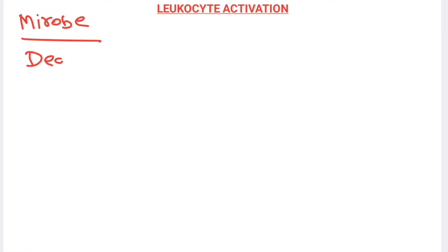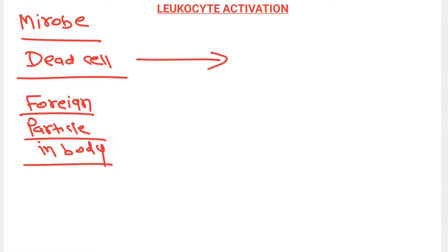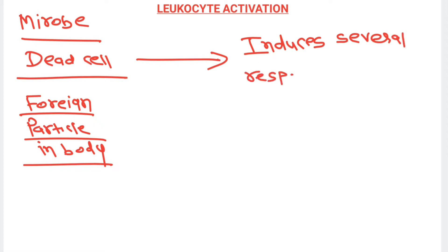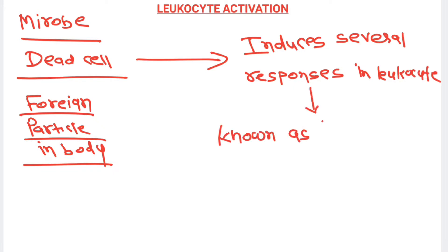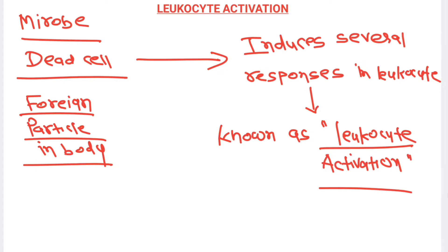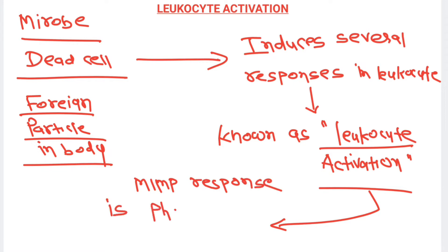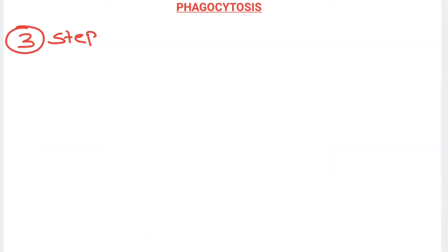Today I am going to teach you about phagocytosis in detail, which is the most important topic from inflammation. Whenever a microbe, dead cell, or foreign particle enters our body, they will induce a response in the leukocyte known as leukocyte activation. By leukocyte activation, microbes and bacteria will be removed from our body, and one of the most important responses is phagocytosis.